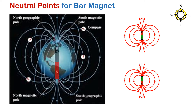Here we have a bar magnet where the north pole is pointing towards the geographic north, and the magnetic field lines emerge from the magnetic north and close in on the magnetic south. Here we also have a bar magnet where the north pole is facing the geographic south, and the field lines again start from the magnetic north and close in on the magnetic south.